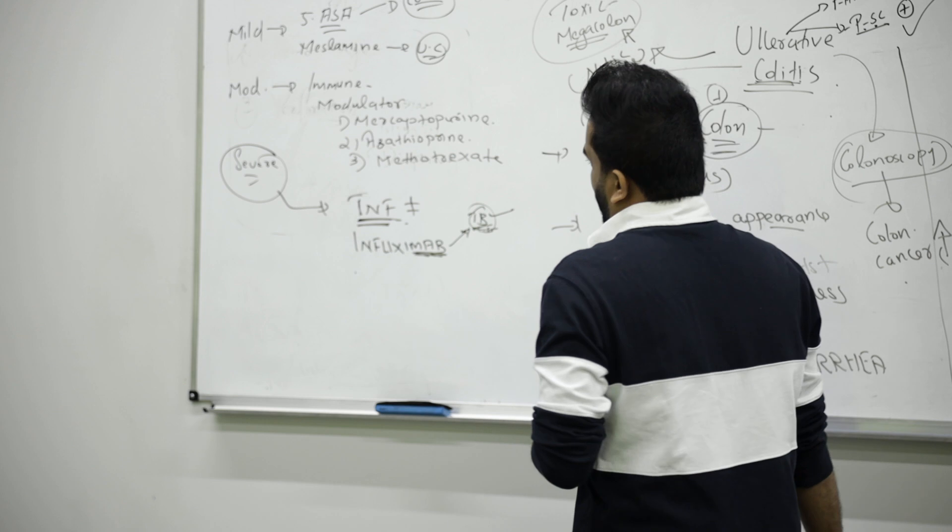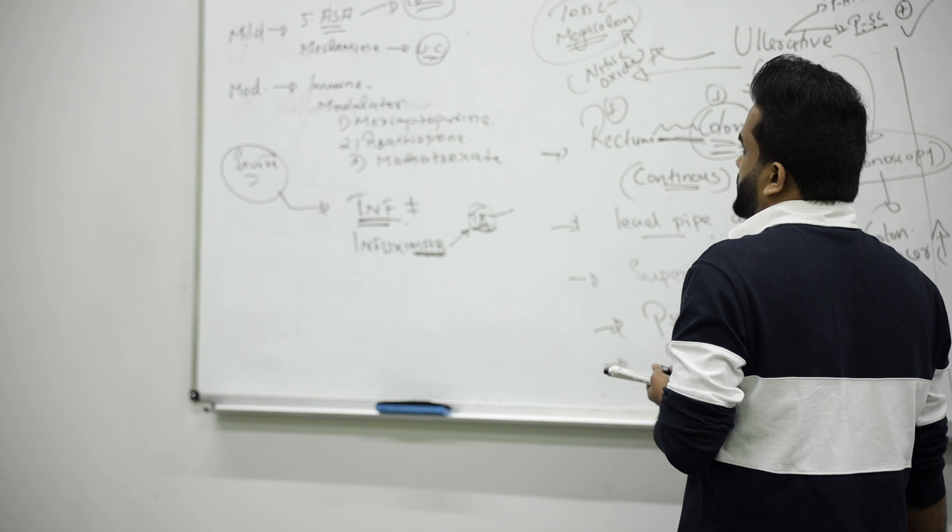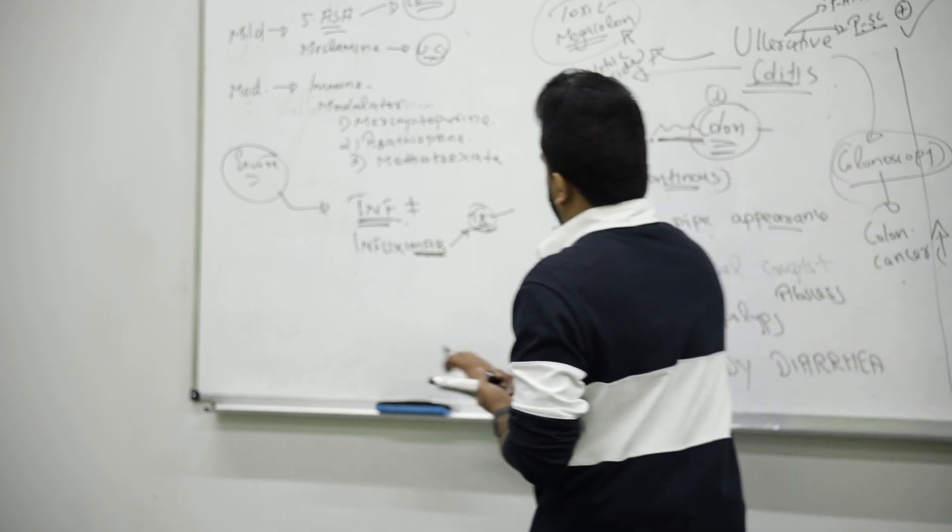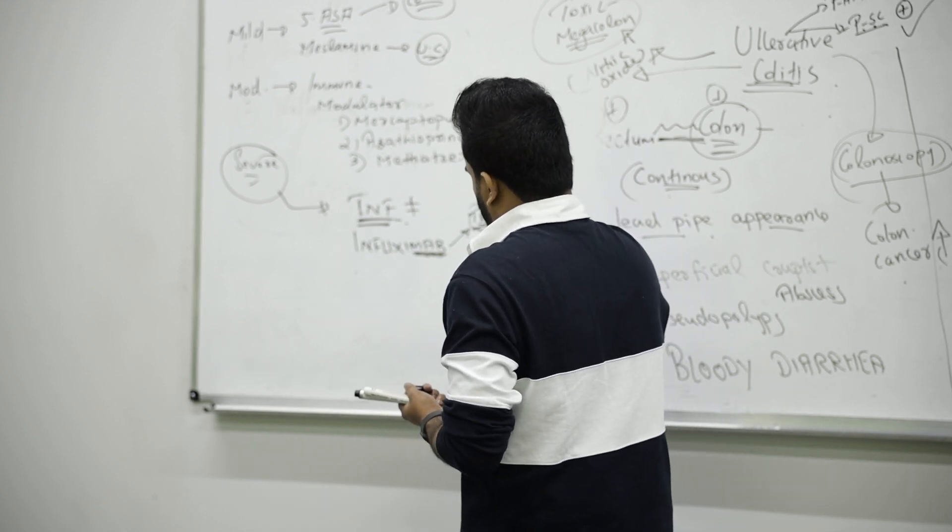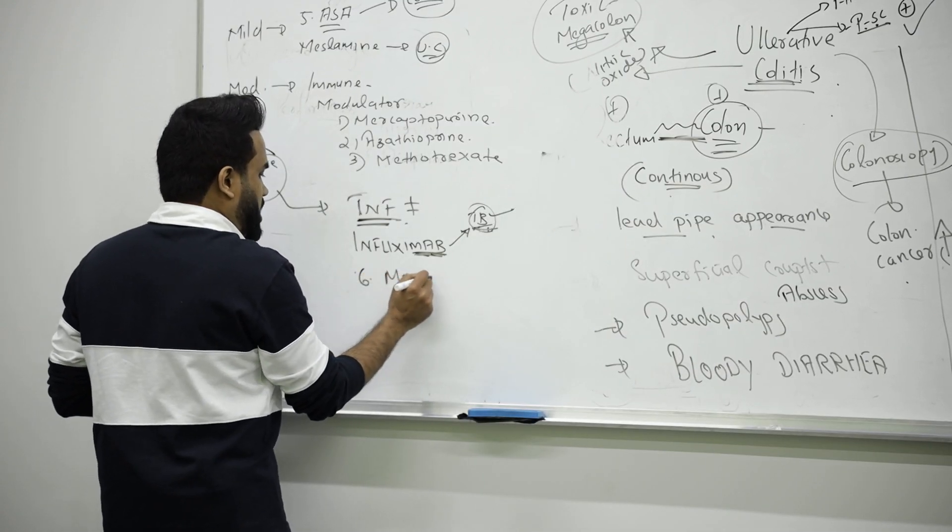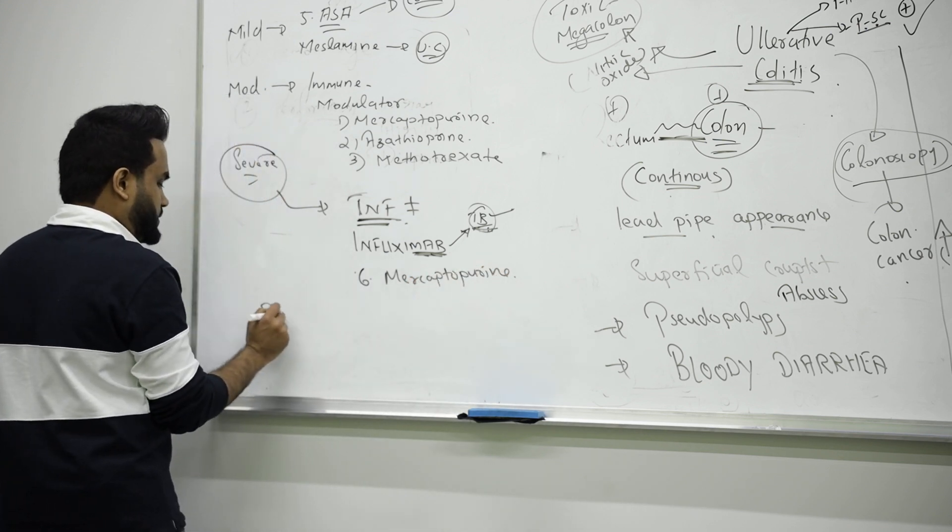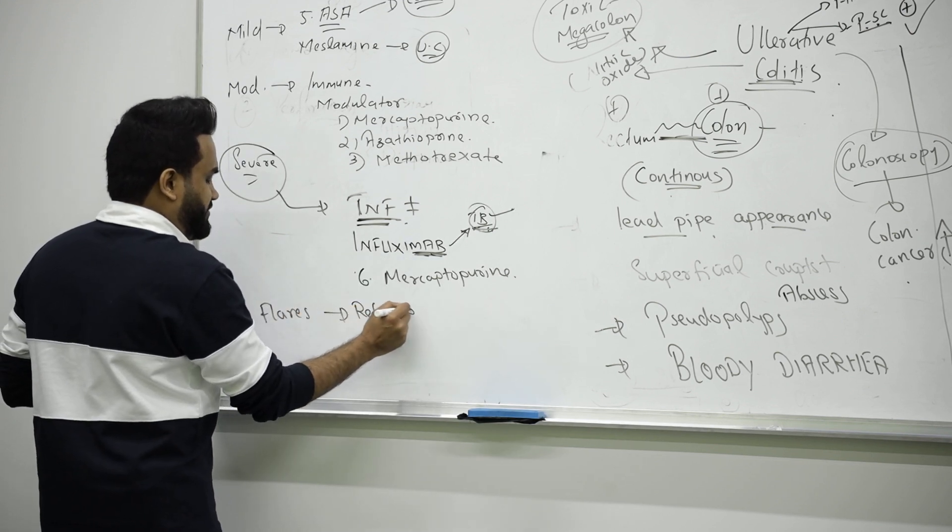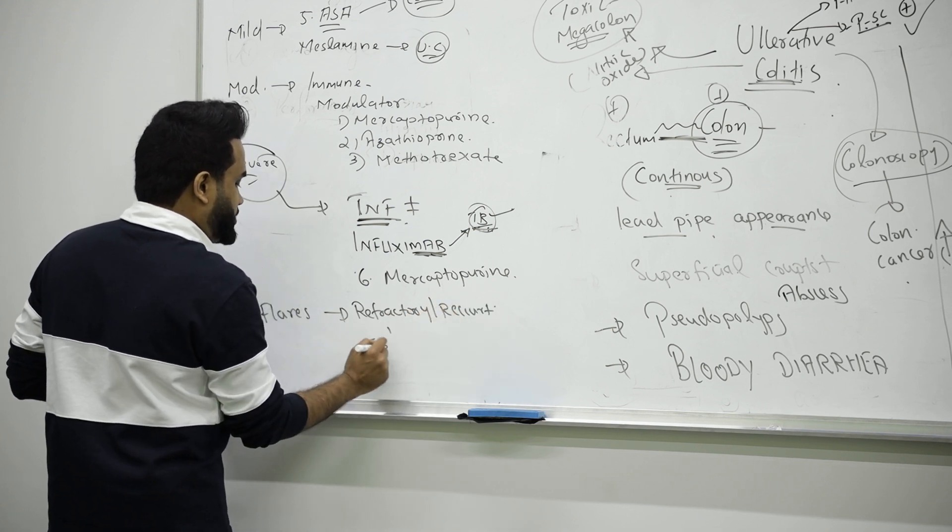We have classified the disease into mild, moderate, and severe. This is how you treat the patient with IBD. One more drug: for flares we can use 6-mercaptopurine for acute flares or refractory or recurrent cases. We can use steroids to suppress it.